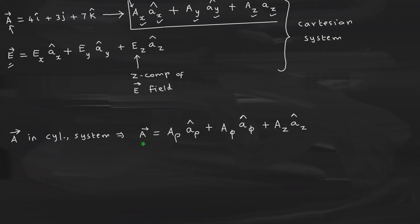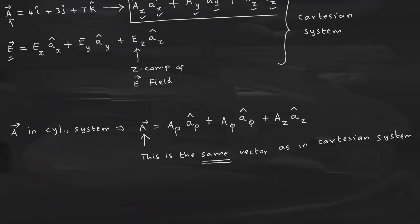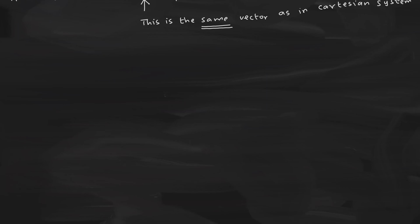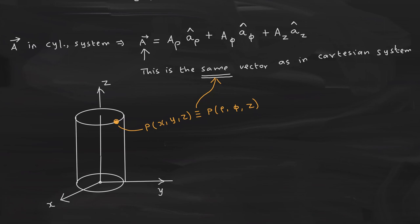But remember by writing this, this fellow that is the a vector doesn't change. A vector quantity, whatever be the vector quantity, that will not change because of your coordinate system. Let me now draw a simple diagram so that you can see what is actually happening. Let us come down. And if I am going to draw a diagram now, cylinder. I will show this as a point P.